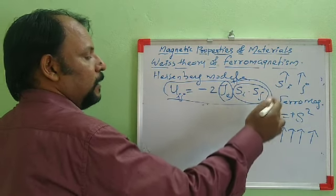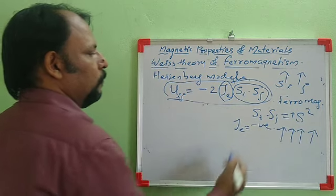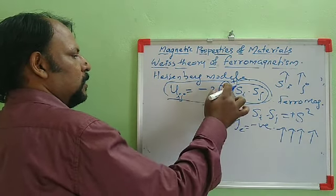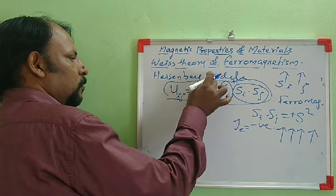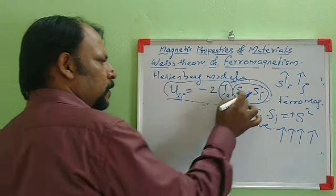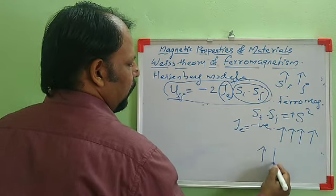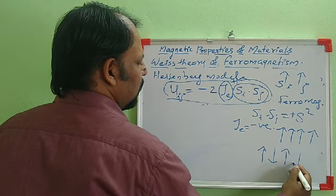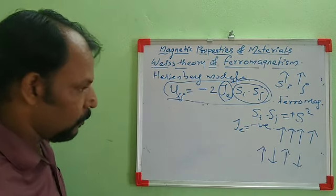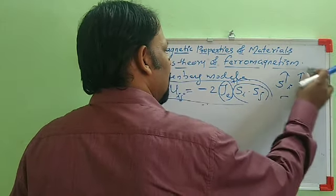For antiferromagnetic material, the exchange integral is negative. Since J is negative and the expression has a negative sign, the product is positive, so to make the energy minimum S_i and S_j should be in opposite directions. In antiferromagnetic material, the tendency of adjacent dipoles is to align in opposite directions, while in ferromagnetic material they align in the same specific direction.